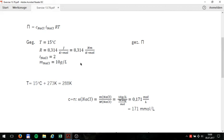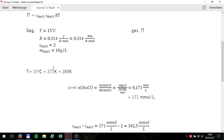Afterward, I convert the temperature from degrees Celsius into Kelvin by adding 15 degrees with 273 Kelvin and receive as result for T 288 Kelvin.